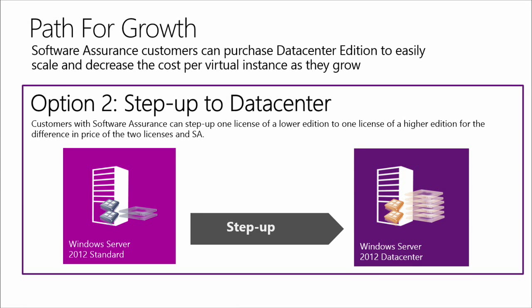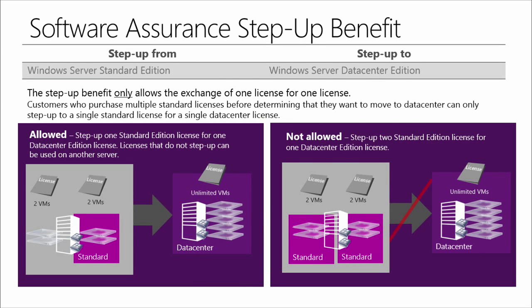Customers with active Software Assurance who want to move towards a highly virtualized environment can use their step-up benefit to move from Standard Edition to Data Center Edition, receiving a price advantage over purchasing the Data Center license outright. Customers should remember they can only step up one license for one license. If a customer knows they will eventually have a highly virtualized environment, they should consider moving to Data Center Edition instead of stacking Standard licenses in the short term. This enables them to grow as quickly as needed without purchasing additional licenses. The Software Assurance step-up benefit only allows the exchange of one Standard license for one Data Center license.